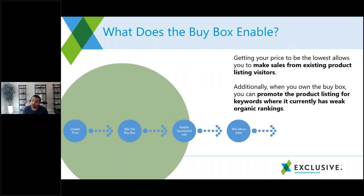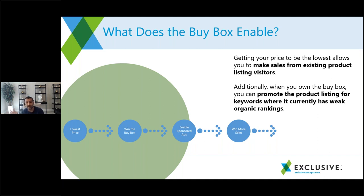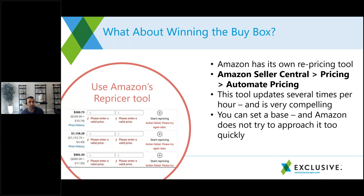When you win the buy box, take full advantage of it. You can start advertising that product. Imagine you win the buy box on a product with 2,000 reviews and a ridiculously high conversion rate — you're winning all the sales for every keyword it ranks for. But there are other keywords it doesn't rank for yet. With that review history, it would do well there too. When you're winning the buy box, think: what other keywords can I expand this product into?